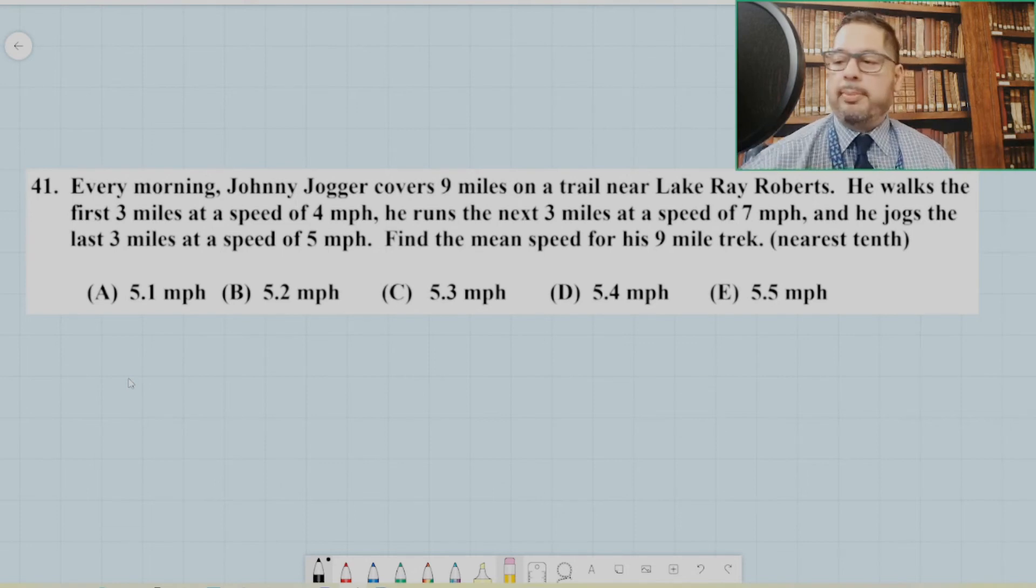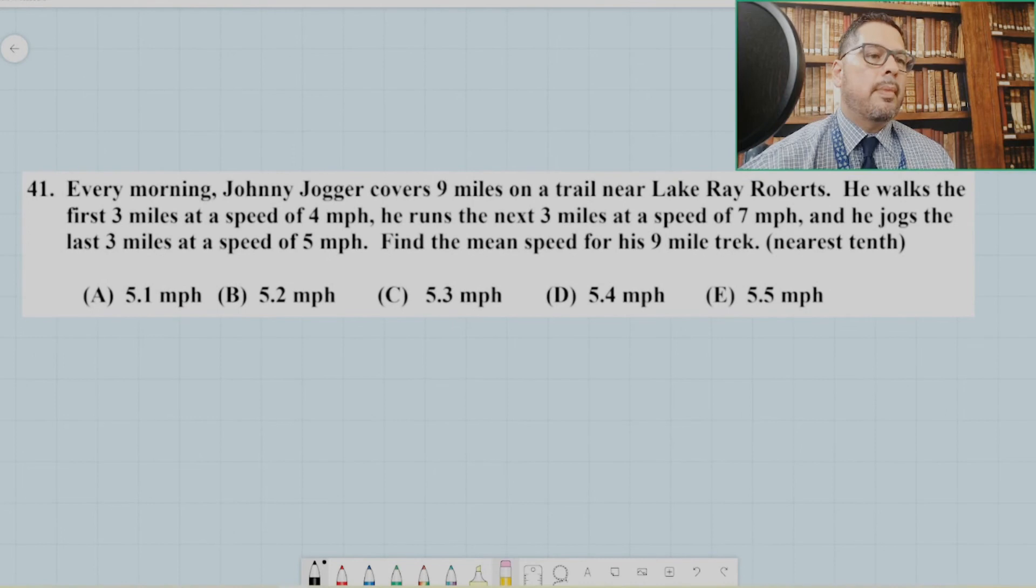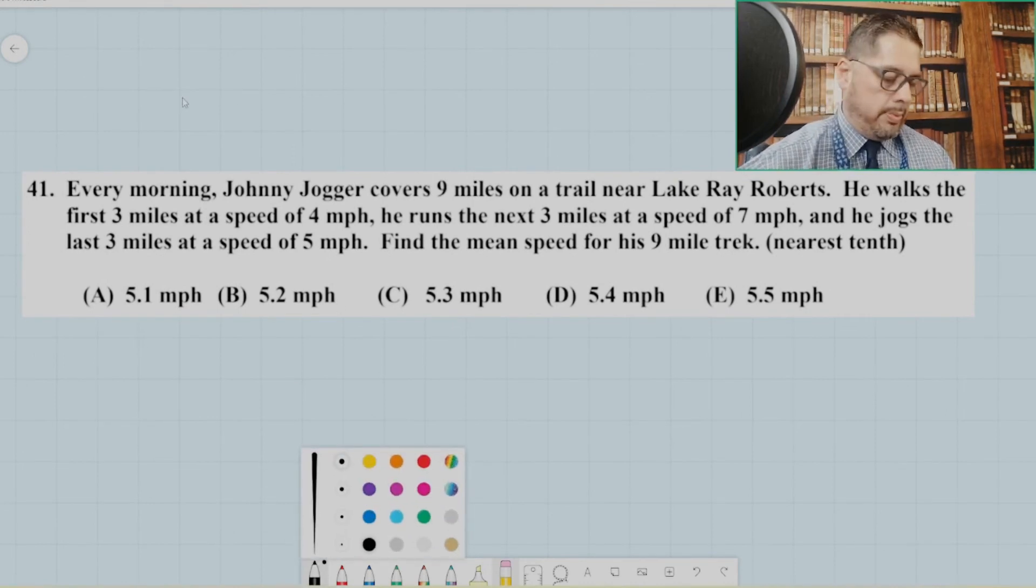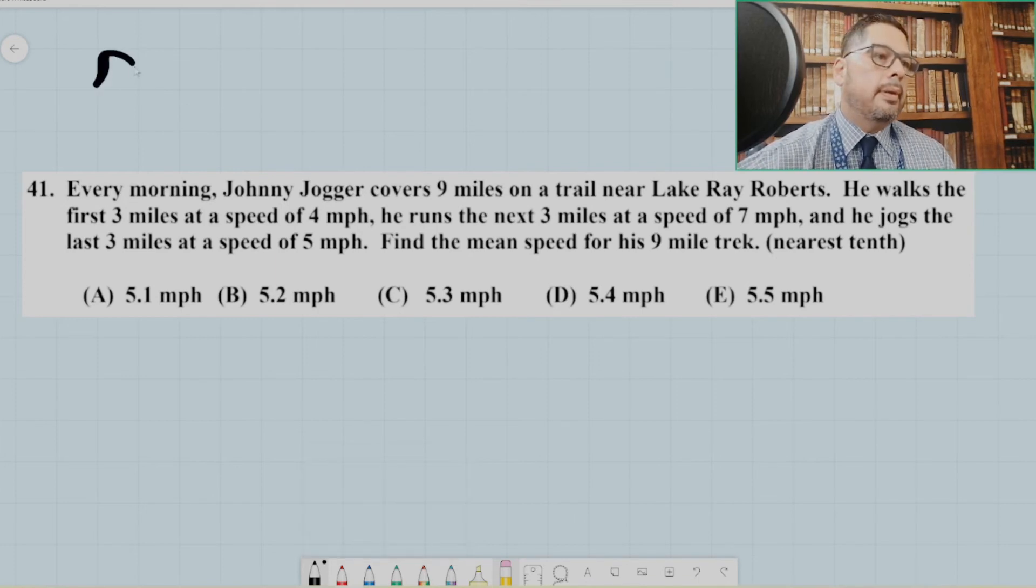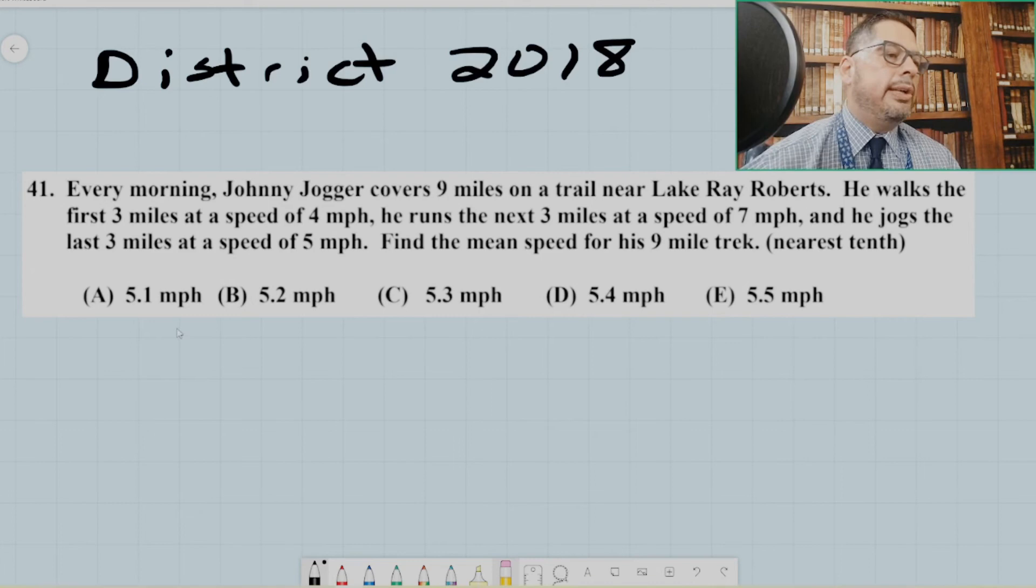So let's read the prompt. This is District 2018, number 41, obviously. So it reads every morning, Johnny Jogger covers nine miles on a trail near Lake Ray Roberts. He walks the first three miles at a speed of four miles per hour. He runs the next three miles at a speed of seven miles per hour, and he jogs the last three miles at a speed of five miles per hour. Find the mean speed for his nine mile trek.